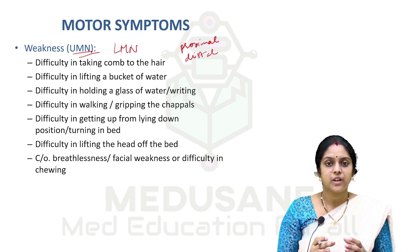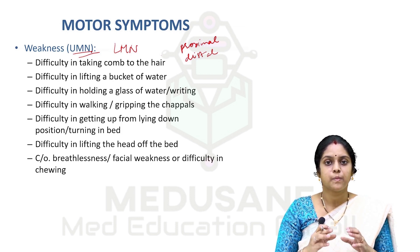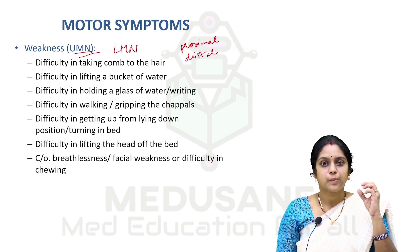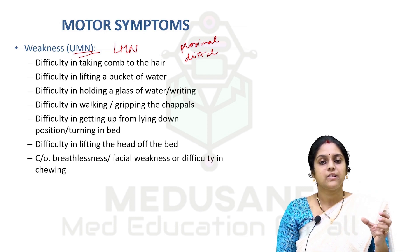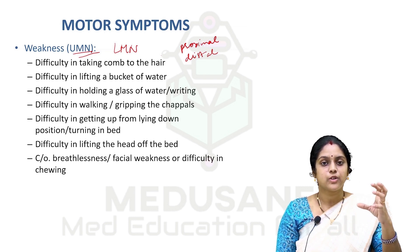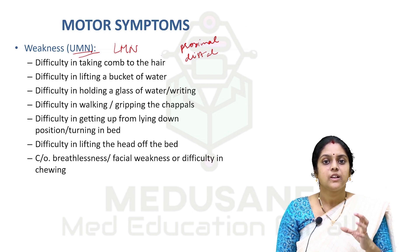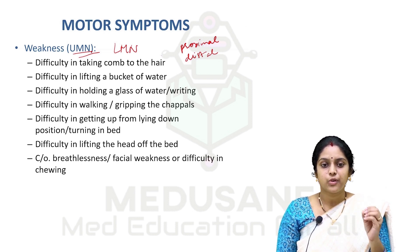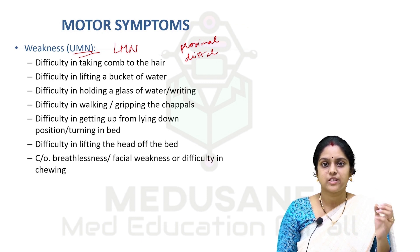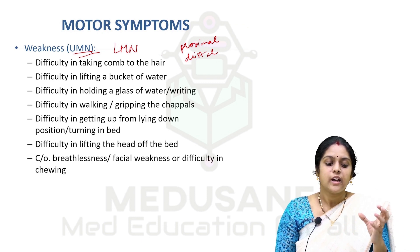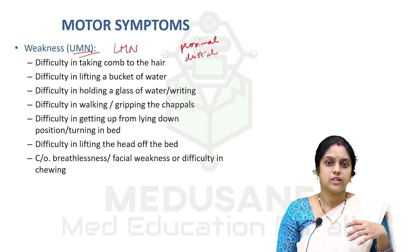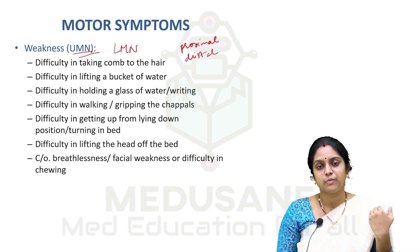CNS examination is based on patterns. We need to identify a particular pattern which will help in associating all the symptoms and coming to a diagnosis. When we see an upper motor neuron lesion, we will know that the patient will have stiff limbs and distal involvement more commonly compared to proximal involvement.